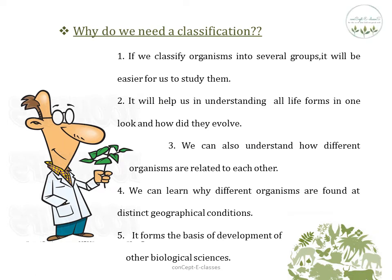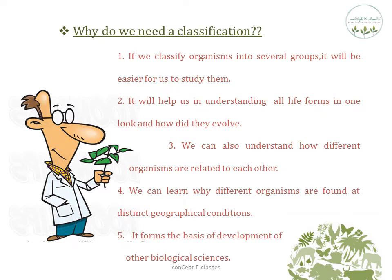Why do we need classification? If we classify organisms into several groups, it is easier for us to study them. It also helps us understand all life forms in one glance — when we see a classification chart, we can understand what life forms exist on earth, how they evolved, how they are related to each other, and why certain organisms are found in certain regions. Classification also forms the basis for the development of other biological sciences.